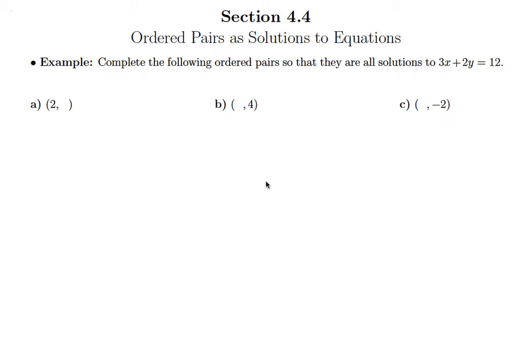So what we have here are ordered pairs given to us with one of the variables left blank in that ordered pair. So in part A, we know the x value is 2, but it's asking us to fill in what the y value should be if x equals 2.